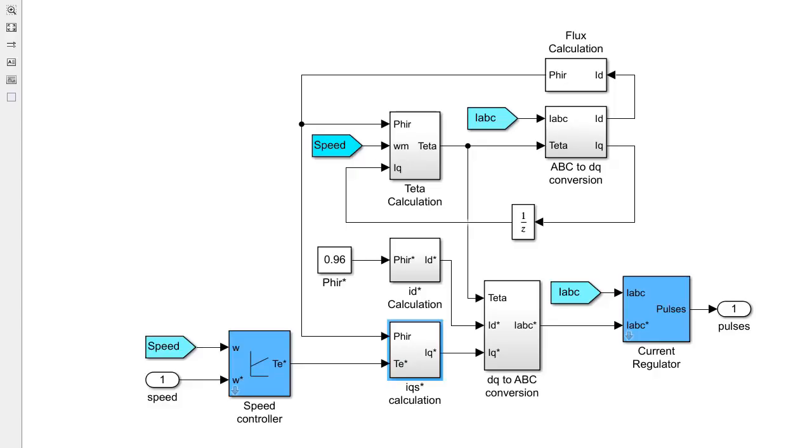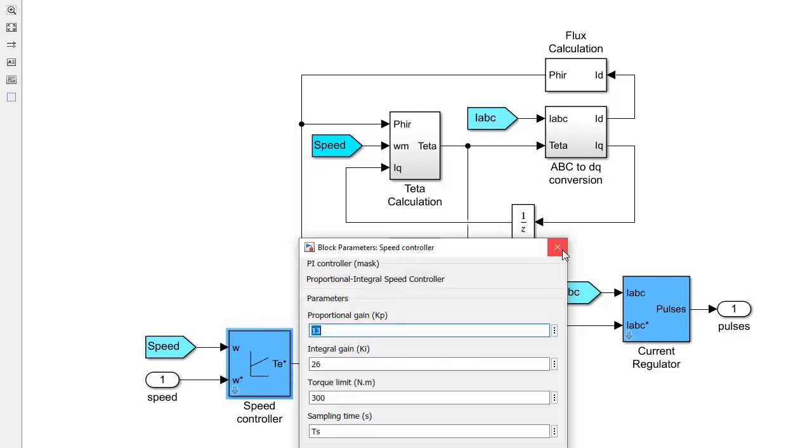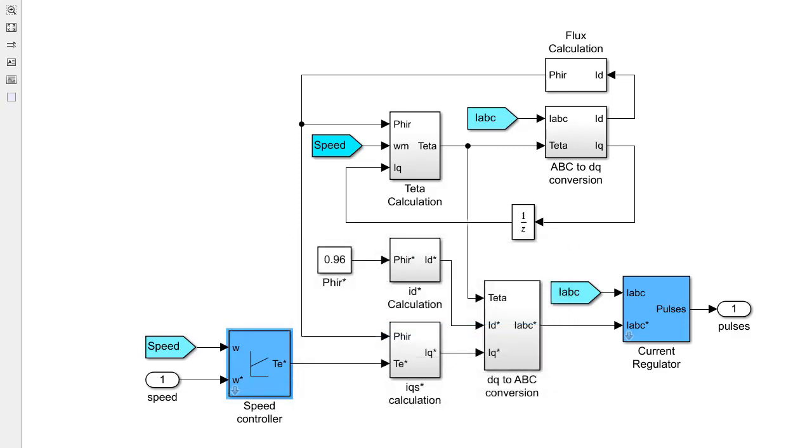In this control system design, similar to PMSM control, a cascade feedback and feedforward control system is configured for velocity control. This simulation shows the speed control system configuration of a typical industrial induction machine drive. In the drive control systems, there are two PI controllers to control the d-axis and q-axis stator currents and one PI controller in the outer loop to achieve the speed control of the motor.